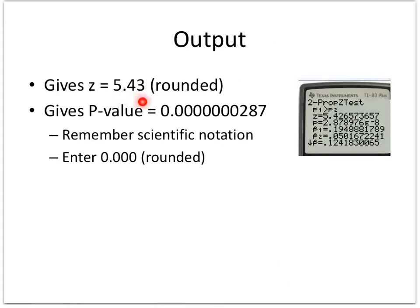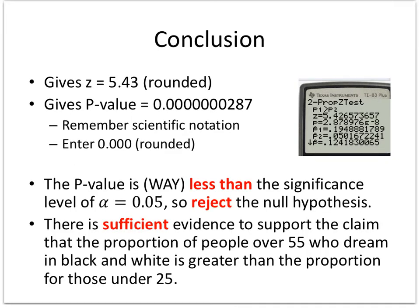This gives you your Z-score, which is the very first line of output. It also gives your p-value. Notice how it's written — 2.87 times E to the negative 8. Remember this is scientific notation, so that means move the decimal eight places to the left. In other words, this is practically zero, so you can just enter zero. The p-value is very, very small.